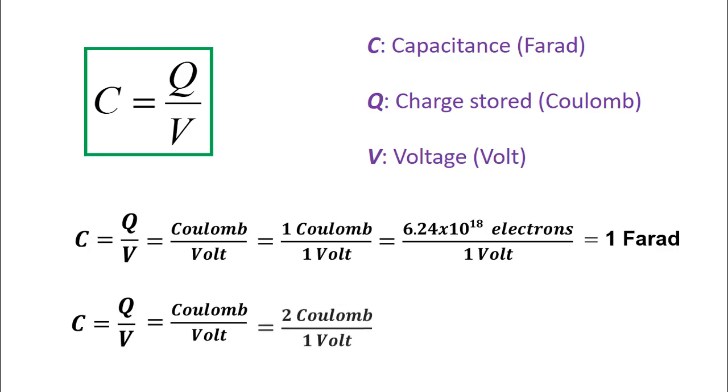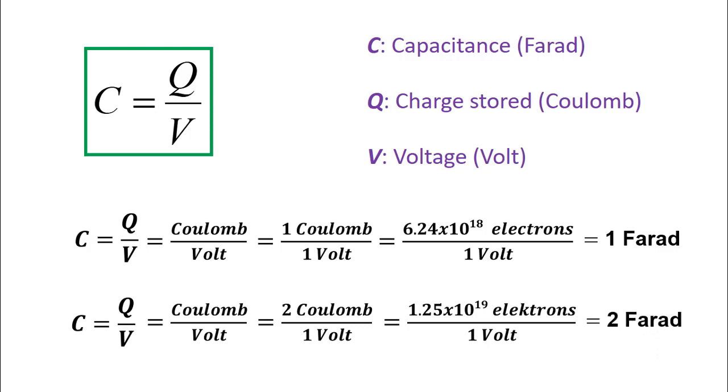In the same way, if 1 volt and 2 coulomb of charge can be stored, this is equal to 2 farad. Farad unit is an enormous value. In capacitors, smaller values such as milli, micro, and pico are generally used.